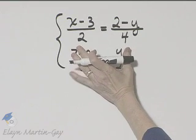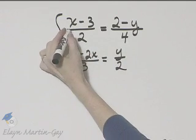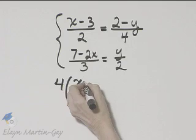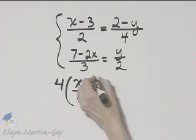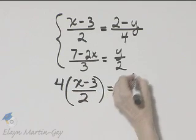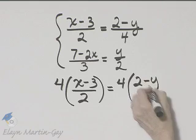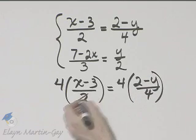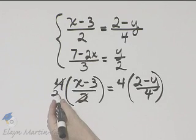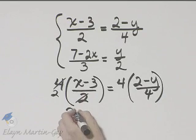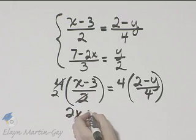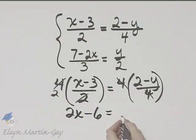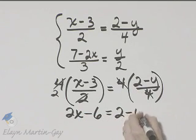Let's multiply both sides by 4. So I'm taking this first equation, I'll multiply the left side by 4 and then I'll multiply the right side by 4. I'm clearing this first equation of fractions. So 2 divides into 4 two times, and let's go ahead and multiply. That's 2 times x, or 2x, minus 2 times 3, or 6, is equal to—and here the 4s divide out, and I have 2 minus y.